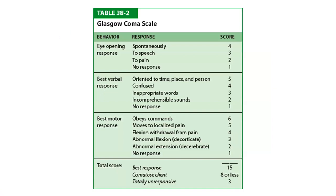The Glasgow Coma Scale (GCS) gives you a score indicating how alert and oriented a patient is. For eye opening: spontaneous = 4, to voice = 3, to pain = 2, none = 1. This is especially important for trauma patients — the hospital will always ask for the GCS when you call in your report.